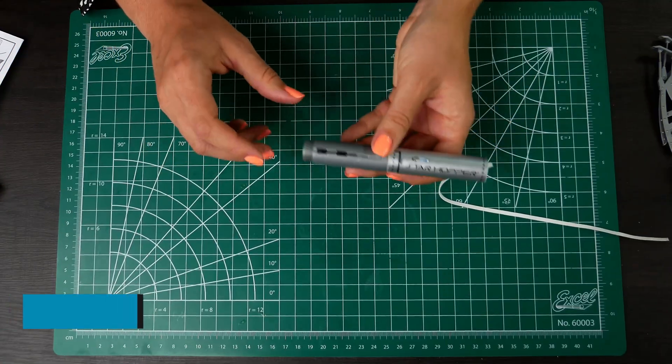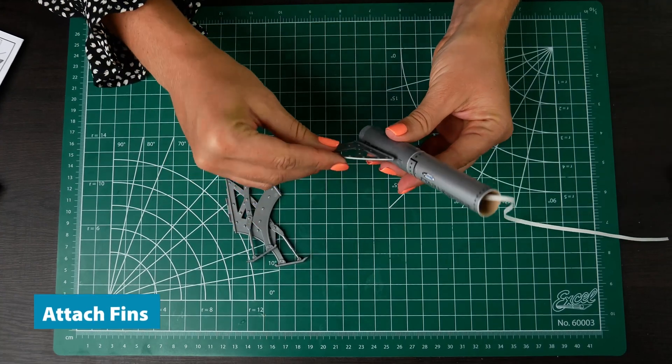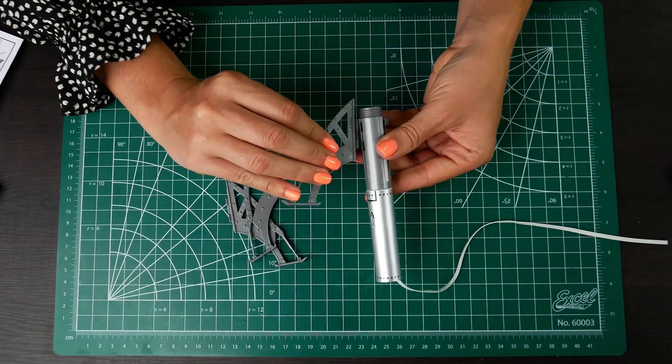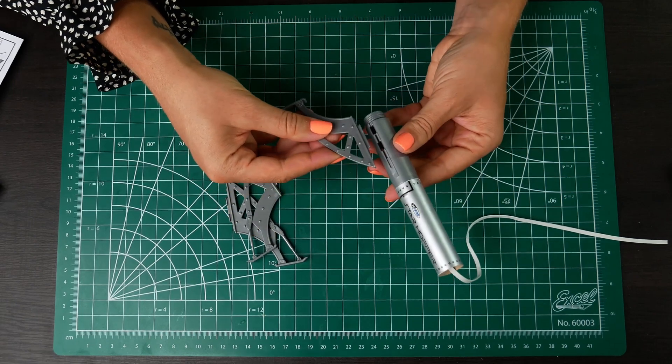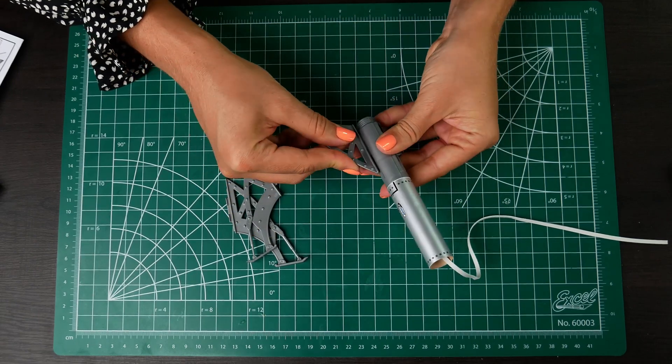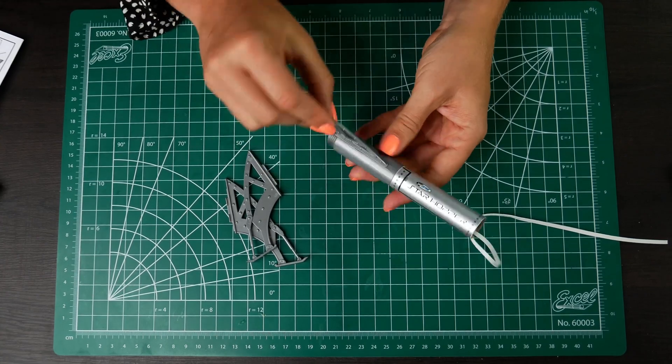Next up, we're gonna attach our fins. So take each fin, make sure that you follow the picture, don't do it upside down. So the foot of the fin should be going towards the bottom of the fin can and you'll just pop it right into that little hole and then push it up. Make sure that you remember to push up once it's in there.